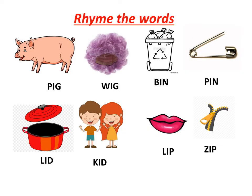Now let us learn to rhyme the words, like pig and wig. Let us spell: P-I-G pig, W-I-G wig. Then we will rhyme more words. See the picture here — bin and pin: B-I-N bin, P-I-N pin. Then you can see the picture of lid and kid: L-I-D lid, K-I-D kid. Then see the picture of lip and zip — these two words rhyme with each other: L-I-P lip, Z-I-P zip.